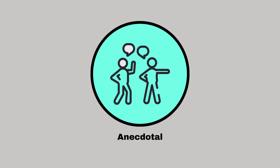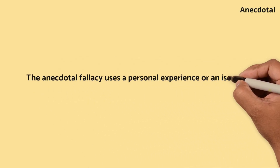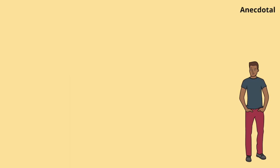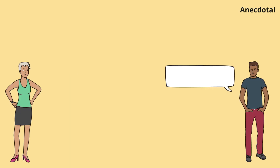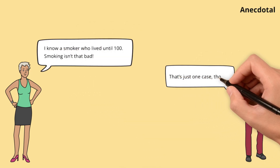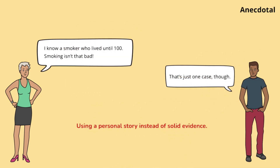Anecdotal. The anecdotal fallacy uses a personal experience or an isolated example instead of a sound argument. Sophia cites a single example to argue against the health risks of smoking, but Lucas points out the weakness of relying on anecdotal evidence instead of comprehensive data.